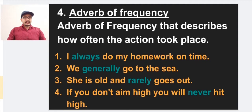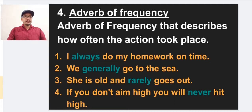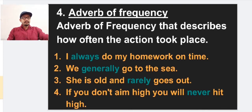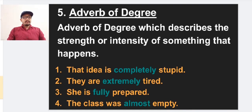The fourth type is adverb of frequency, which describes how often the action took place. It always answers the question 'how often.' Examples: 'I always do my homework on time' — always. 'We generally go to the sea' — generally. 'She is old and rarely goes out' — rarely. 'If you don't aim high, you will never hit high' — never. All these answer 'how often,' so they are adverbs of frequency.